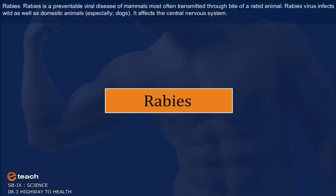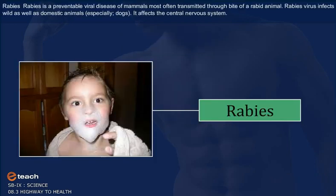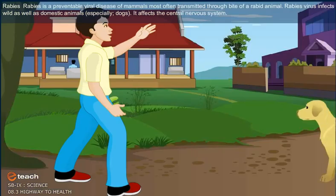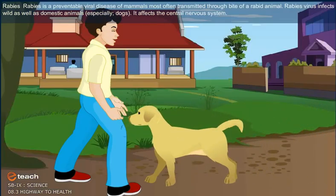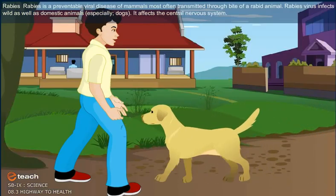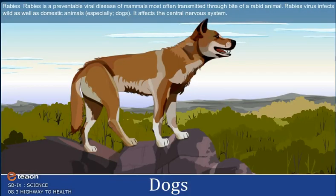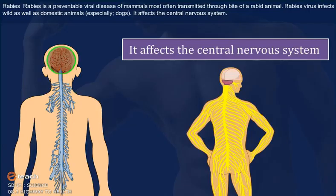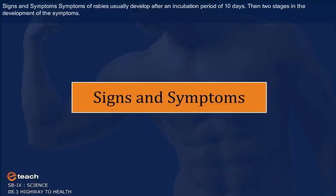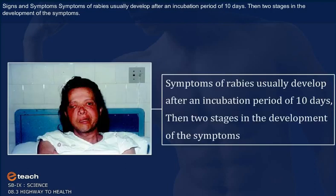Rabies is a preventable viral disease of mammals, most often transmitted through the bite of a rabid animal. It infects wild as well as domestic animals, especially dogs. It affects the central nervous system. Symptoms of rabies usually develop after an incubation period of 10 days, and there are two stages in the development of symptoms.